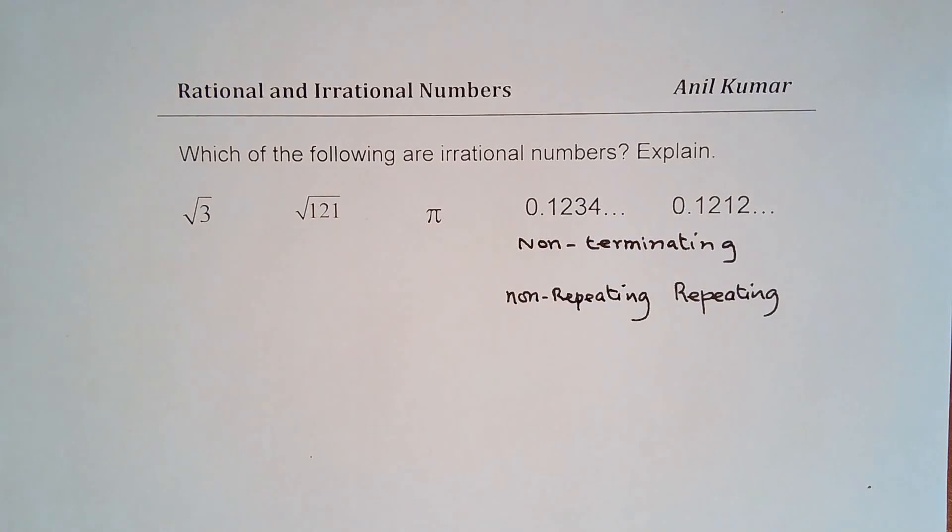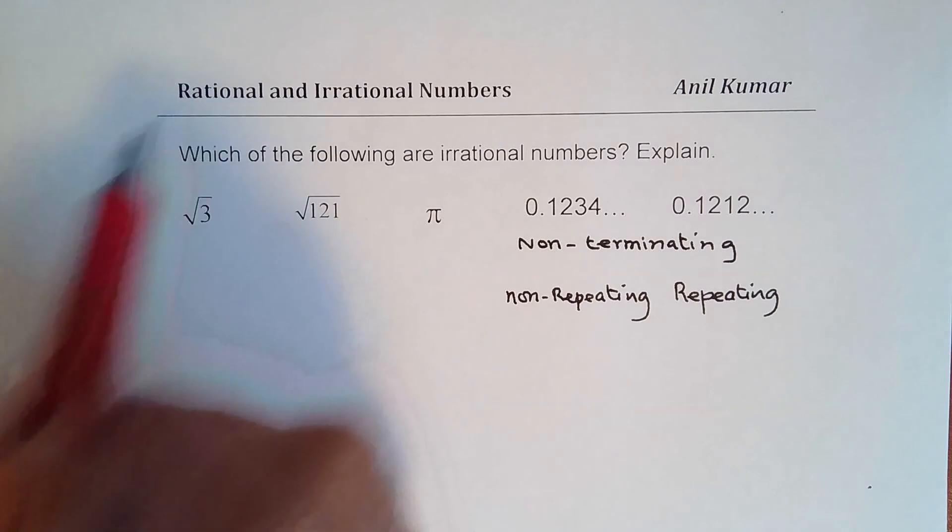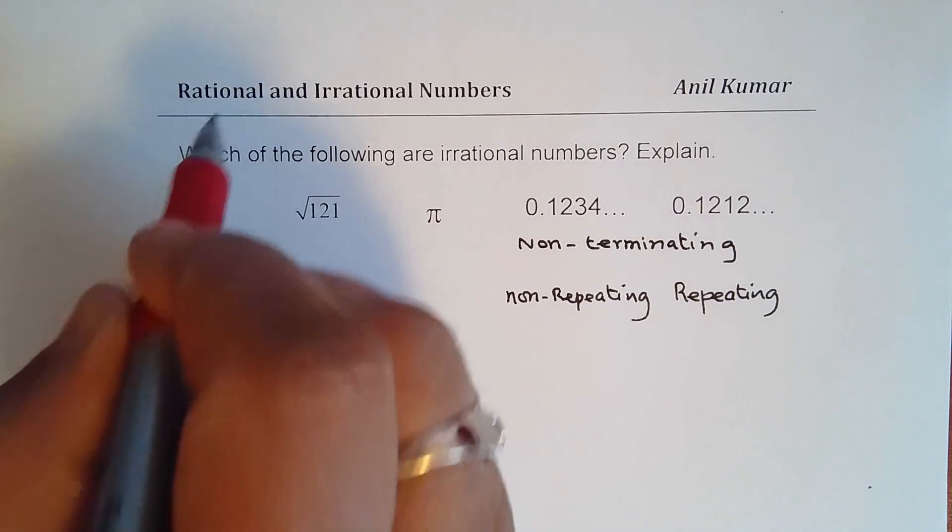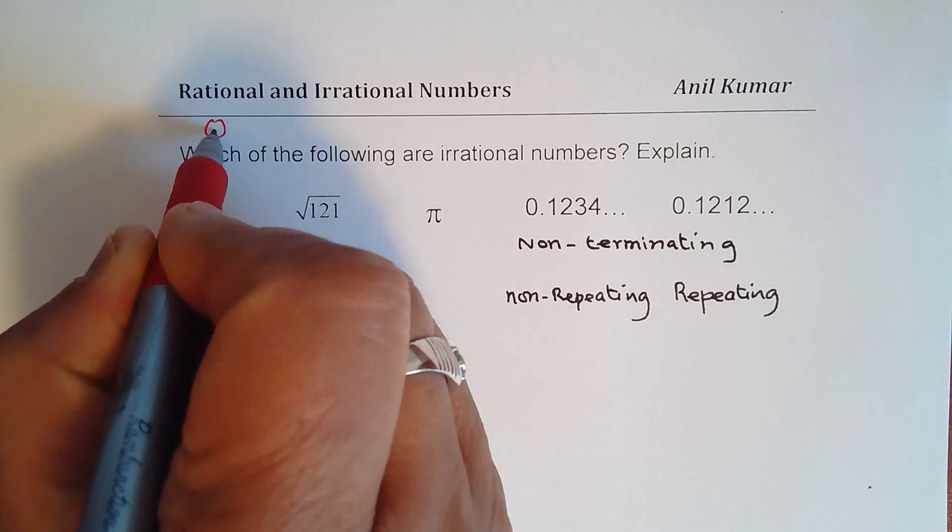So what we talked about in our video is that the numbers which are non-terminating and repeating are actually rational numbers, since they can be written in the form of P over Q, right? Now I think most of you know the answer. So let's write down our answer. Rational numbers are denoted by the letter Q.